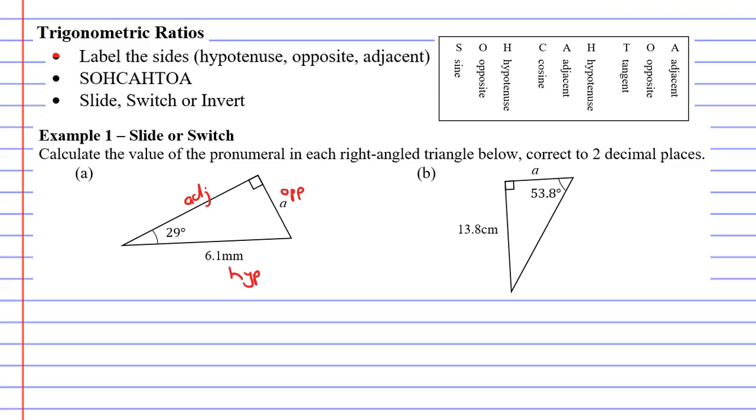Now you will notice that our hypotenuse has a value of 6.1 millimetres and our opposite has a pronumeral of A and our adjacent has nothing. So I'm going to cross off the adjacent. I'm not going to use it. I'm only using the opposite and hypotenuse. So that's the first step done.